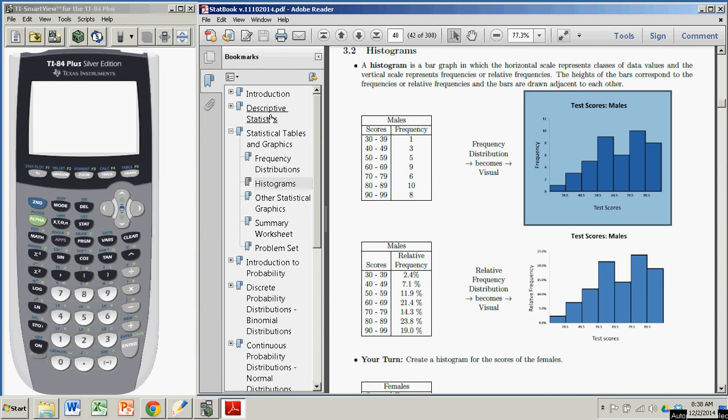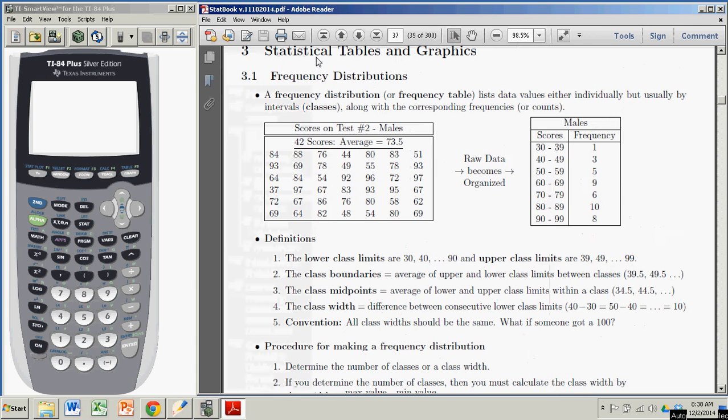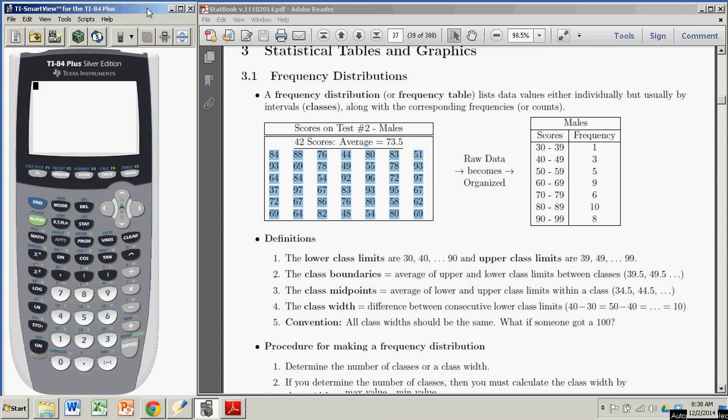To get started, we need to take these 42 scores and enter them into the TI. That's a time-consuming task, but if we were to do that—I've already done it—you would press the Stat button, and the default opening setting is under Edit and 1. That's what we want to do. We want to edit a list. So we hit Enter there.